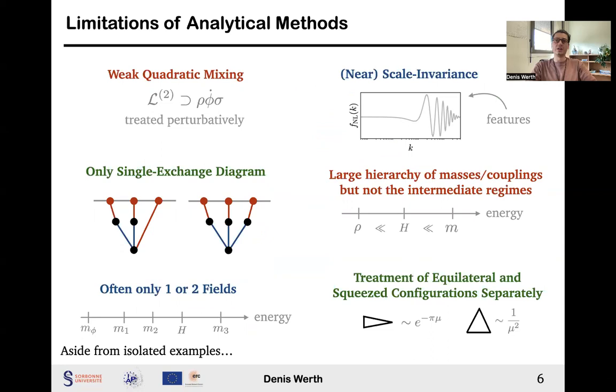In fact, the entire space of motivated theories is not covered by current predictions, and the reason is purely technical. For example, in multi-field models of inflation, because Lorentz invariance is broken, we always have the ever-present linear mixing. In analytical calculations, this coupling is assumed to be weak, although it might not be the case, so that it can be treated perturbatively. For now, we only have analytical solutions for single exchange diagrams, but not for the double or triple exchange diagrams, even if the single exchange diagram in general does not generate the largest signal.